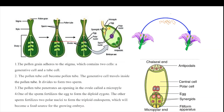Pollination occurs with the help of pollinating agents like birds, insects, wind, etc. During pollination, pollen grains are deposited on the stigma, which is part of the female reproductive system. The pollen grain contains two cells: a generative cell and a tube cell. The tube cell develops into the pollen tube, shown here as the yellow structure.